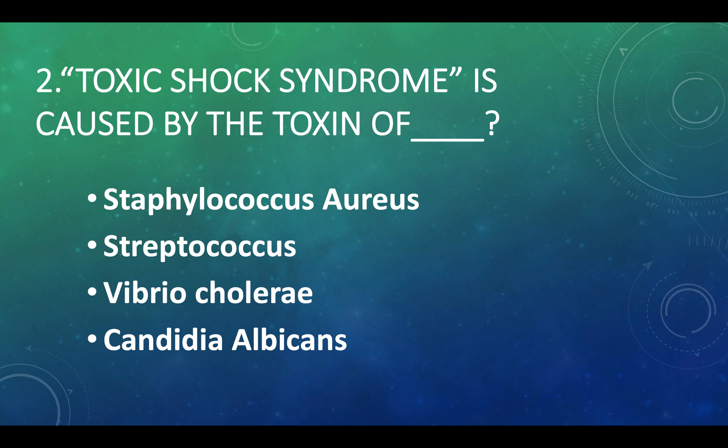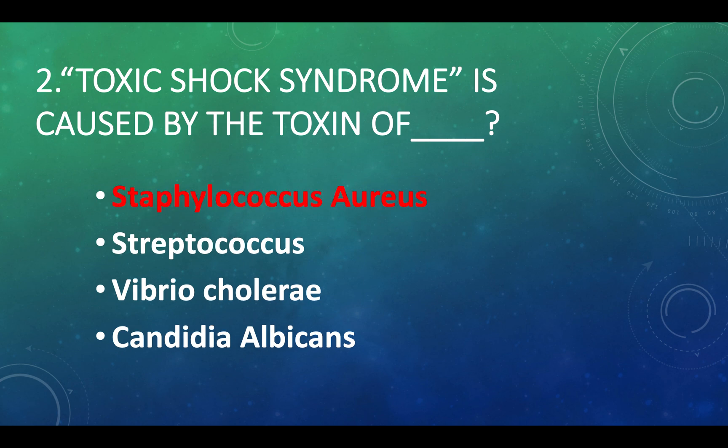Toxic shock syndrome is caused by the toxin of: Option A — Staphylococcus aureus, Option B — Streptococcus, Option C — Vibrio cholerae, Option D — Candida albicans. Answer: Option A, Staphylococcus aureus.